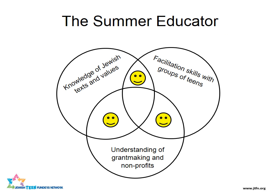We're going to spend a little time talking about you as the summer educator of this program. On the screen you see a triple Venn diagram representing three skill sets we believe will help you successfully run your teen foundation: A, a knowledge of Jewish text and values; B, facilitation skills with groups of teens; and C, understanding of grant making and nonprofits. We're going to do a poll on these three areas.